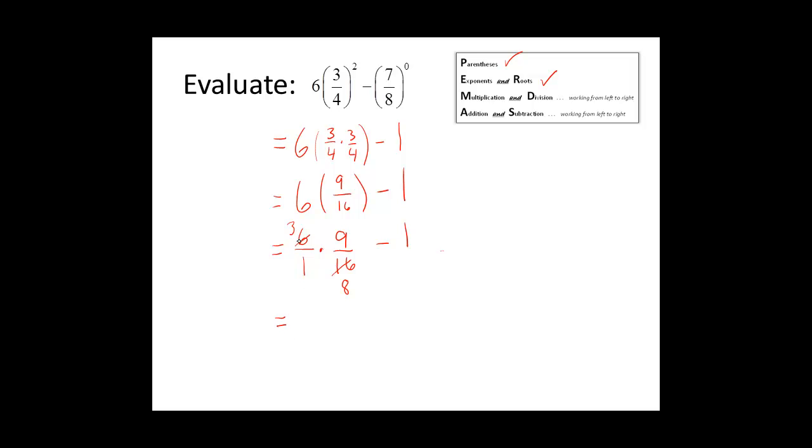Now we will multiply our numerators together. 3 times 9 is 27, and 1 times 8 is 8. So now we have finished our multiplication step, and now we need to do our addition and subtraction.